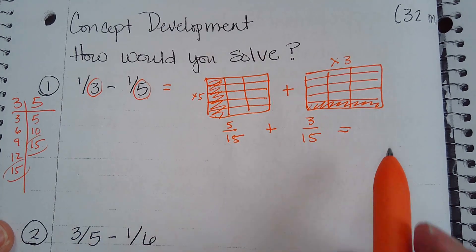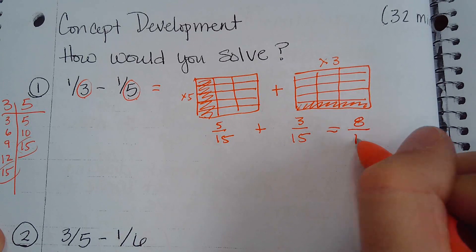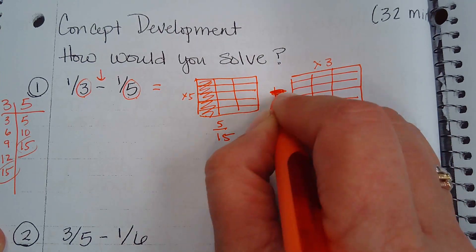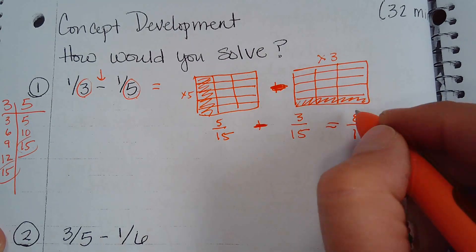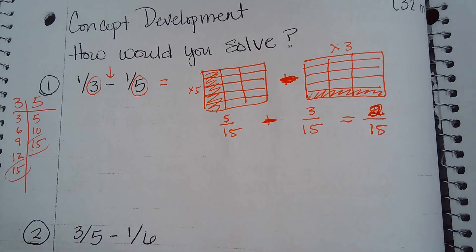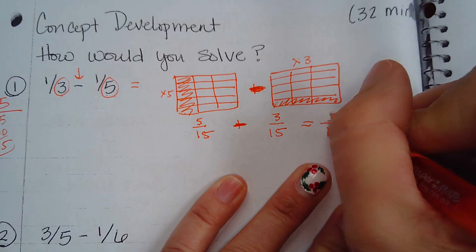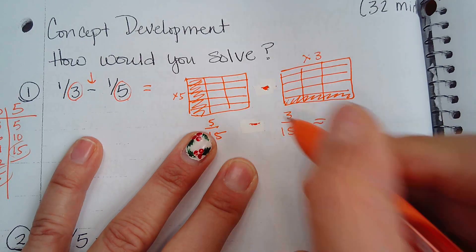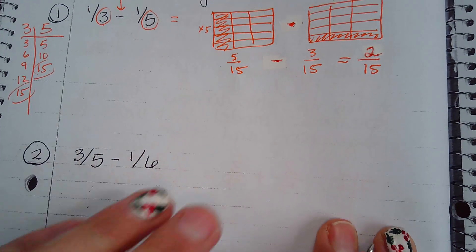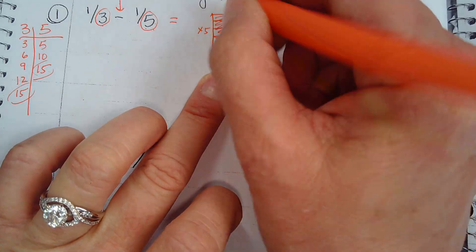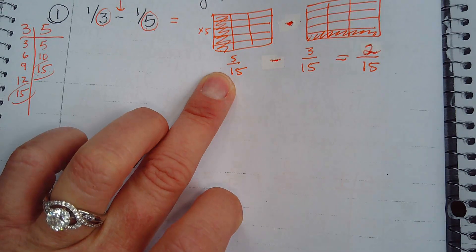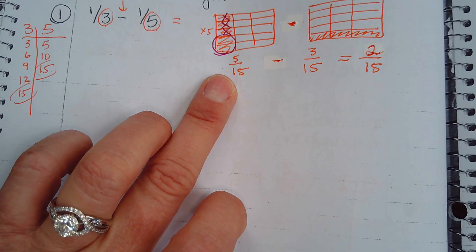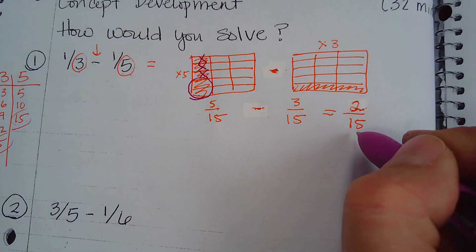One-fifth is still equal to three-fifteenths. Since it's subtraction, when I subtract three from five-fifteenths, I take away one, two, three and I'm left with two-fifteenths. So my answer is two-fifteenths.